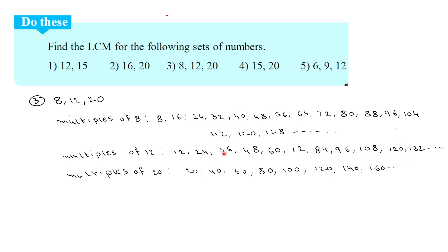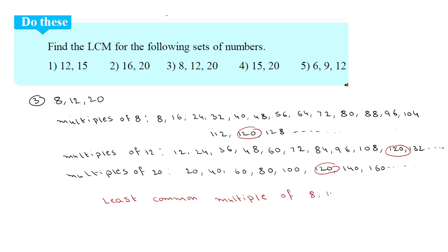Looking at the common multiples, 120 is the first common multiple shared by 8, 12, and 20. So the least common multiple of 8, 12, and 20 is 120.